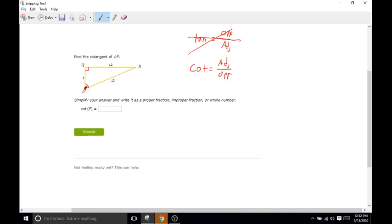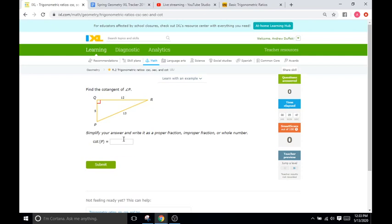If we're doing P, the adjacent side is the side that is connected, so 5, and then over the opposite side of P. If we go to the opposite, that's going to be 12. So cotangent is just 5 over 12.